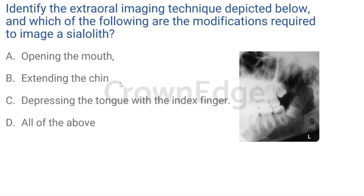So far we have seen how to do the initial workup for a patient with hyposalivation, and have covered up to plain film radiography to rule out obstruction, malignancy, or inflammatory processes. In the next classes, we will cover sialography and advanced imaging techniques, then individual salivary gland disorders, systemic implications on salivary gland function, and how hypofunction systematically affects the patient. We will need another seven to eight classes on this topic. Thank you all, have a very nice evening, stay home and keep safe.